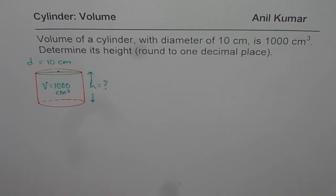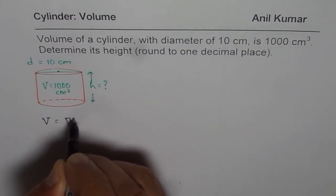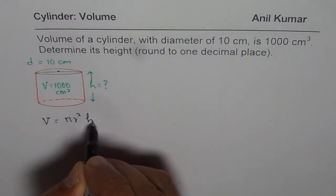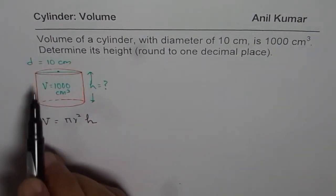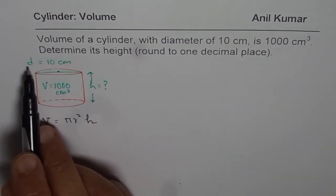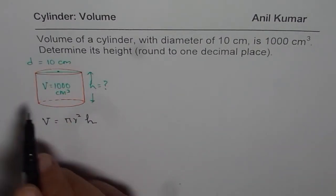Now as you know, what is the formula for volume? Volume is πr²h. So that is the volume of a cylinder. Now in this question we are given diameter. So how can you write diameter and radius?